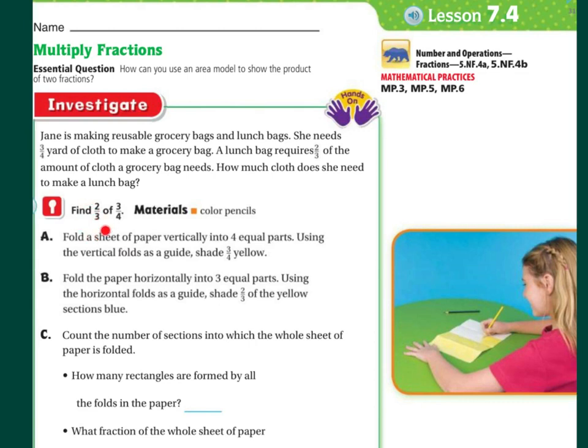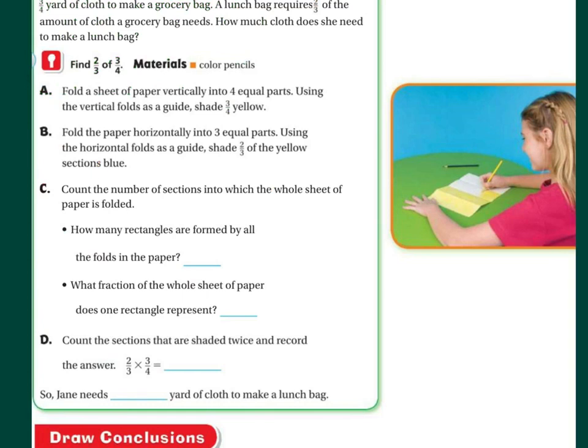So, two thirds of three-fourths. If you have a piece of paper, you can fold the sheet of paper vertically into four parts, using the vertical folds as a guide, and then shade three of them yellow. Fold the paper horizontally into three equal parts, using the horizontal folds as guides, and shade two thirds of the yellow sections blue. Count the number of sections into which the whole sheet of paper is folded. How many rectangles are formed by all the folds in the paper? If you folded correctly, you would have had 12.